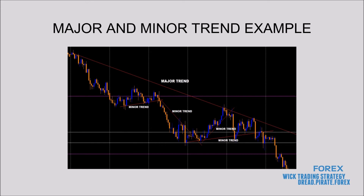With this minor trend, we broke and then the candle came right back up to the bottom of the trend and went down. On this minor downtrend, we broke it and came right back up to the major trend and rejected. The minor bullish trend formed heading back to the major trend — we got to the major trend, rejected, then broke the minor trend. You can see this wick came right back up to the major trend and the minor trend and rejected, coming right back down. That would have been a really good confirmation of a sell right there.